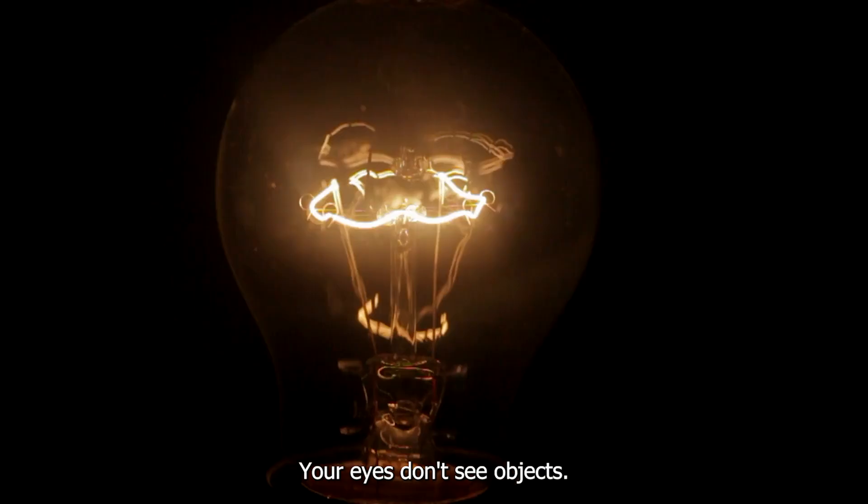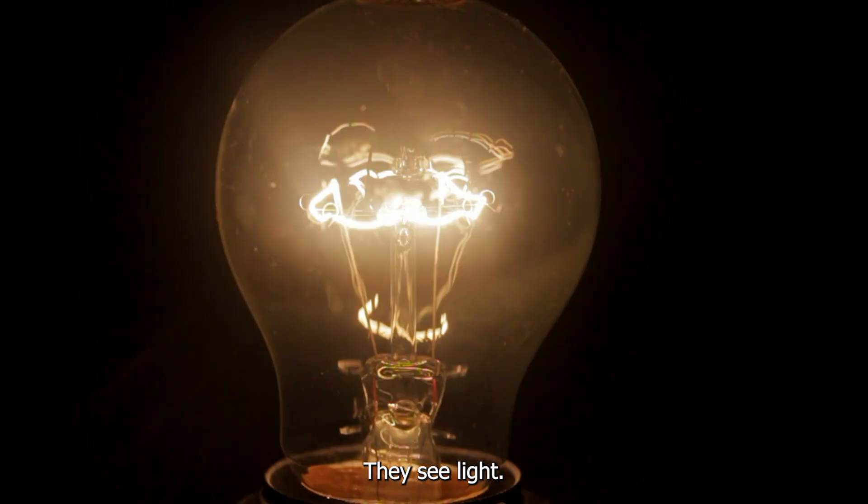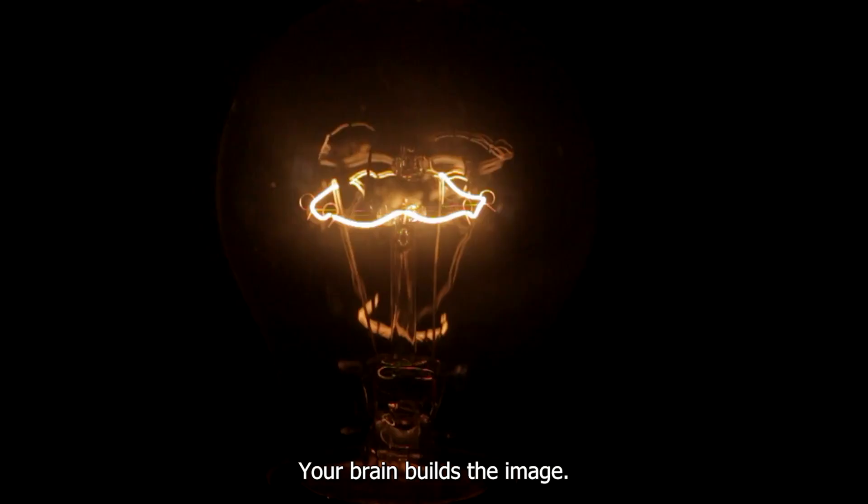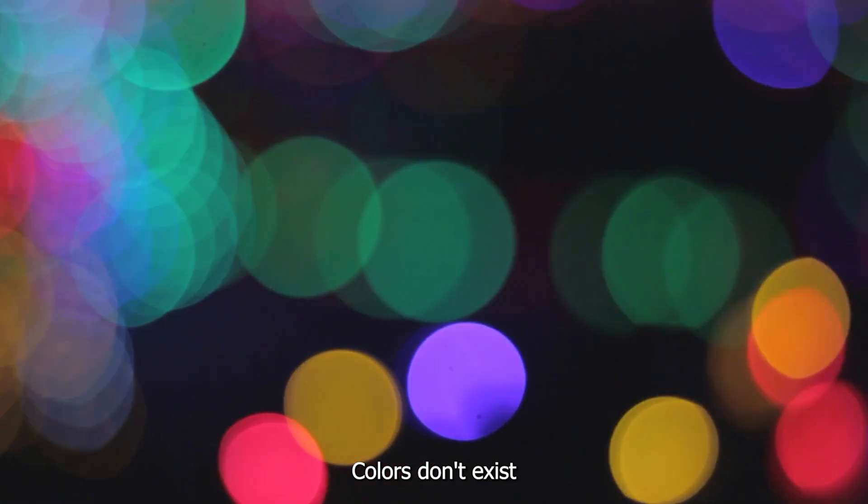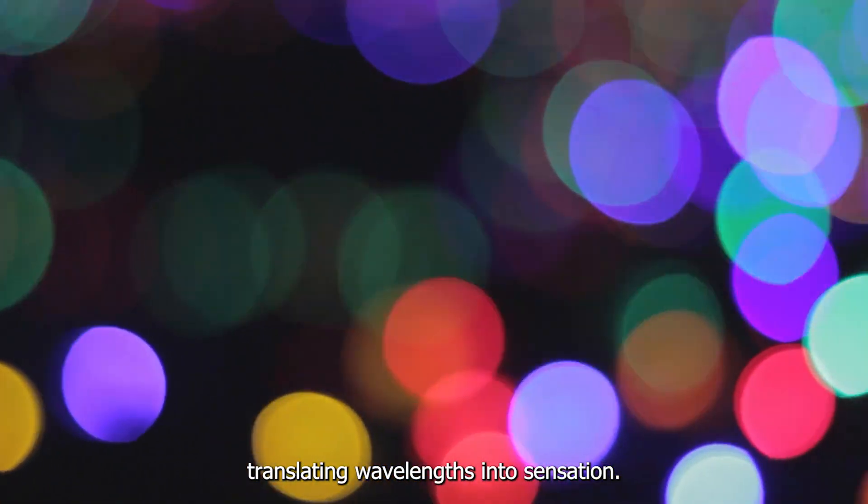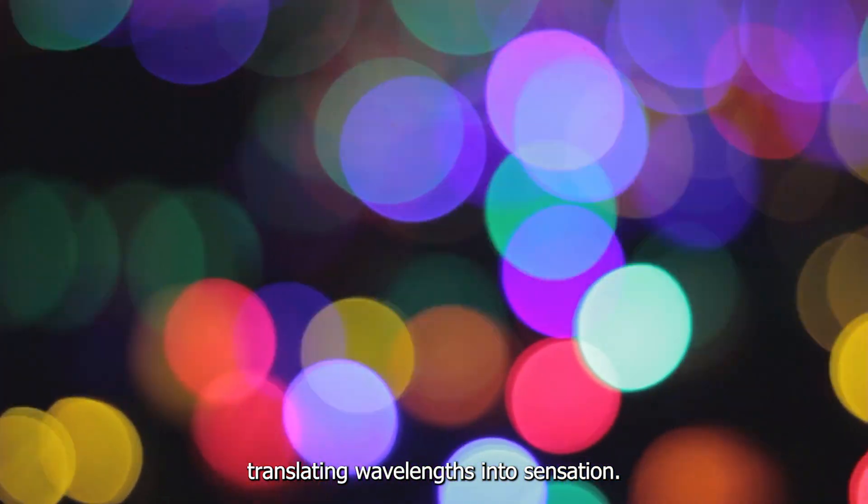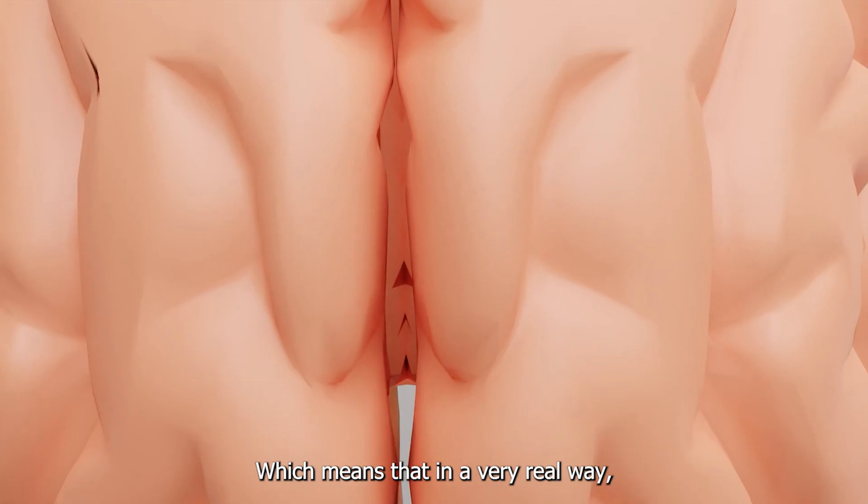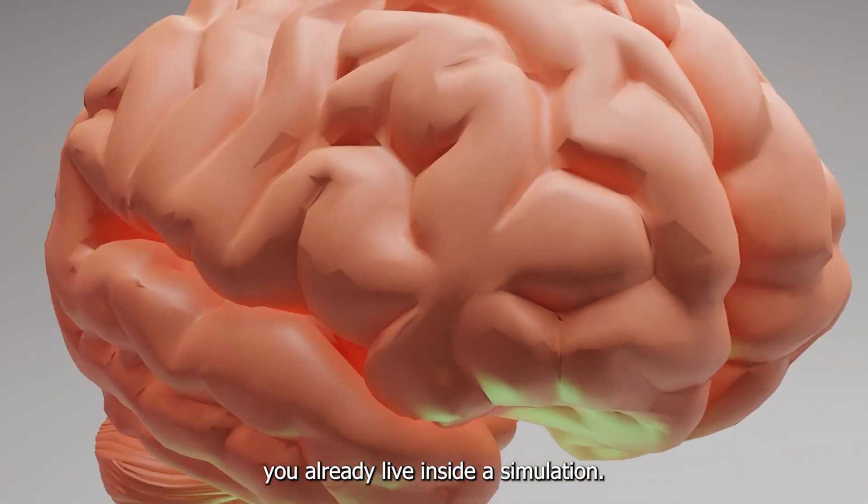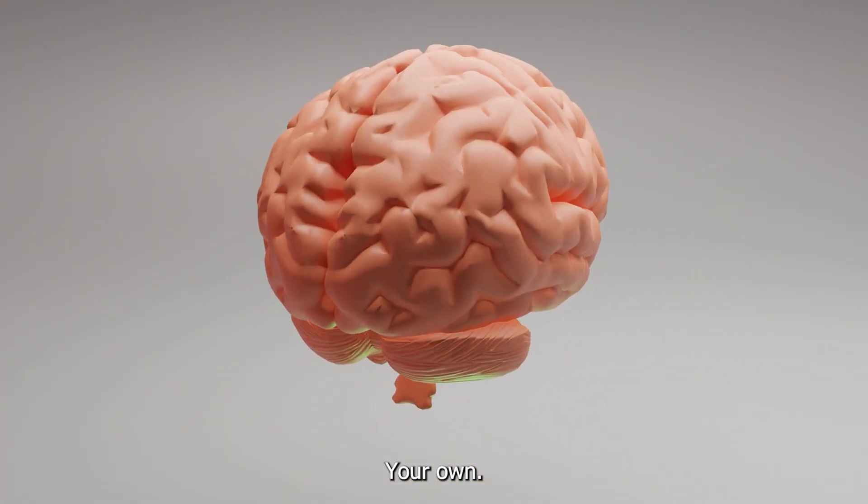Your eyes don't see objects. They see light. Your brain builds the image. Colors don't exist out there in the world. They're just your brain translating wavelengths into sensations, which means that, in a very real way, you already live inside a simulation. Your own.